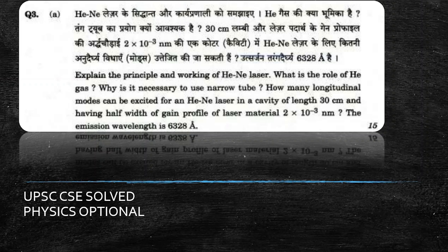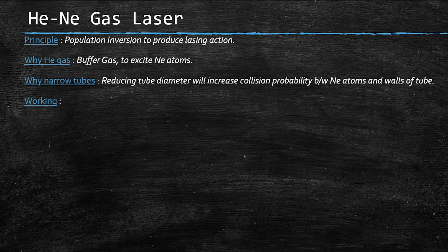Let's start with the basic understanding of the helium-neon gas laser. To produce lasing action, the process of population inversion must be achieved. Helium gas acts as a buffer gas to excite the neon atoms. We choose a narrow tube to increase the collision probability.